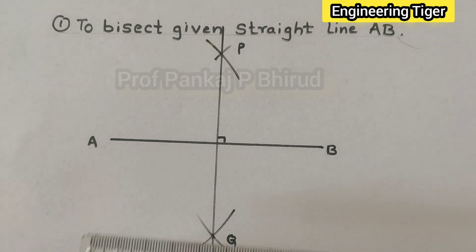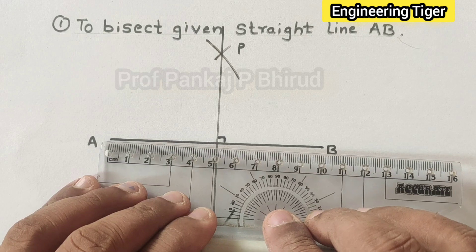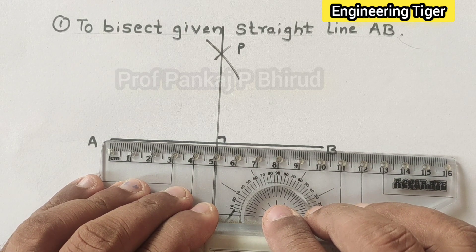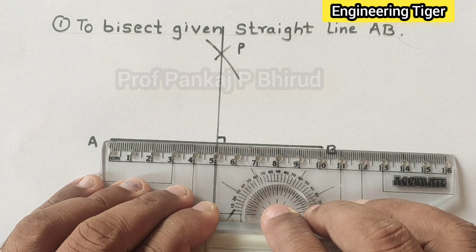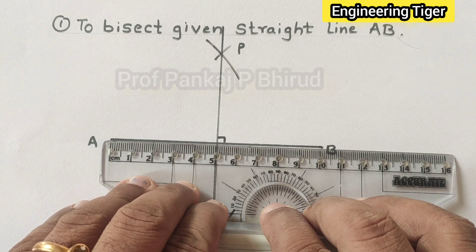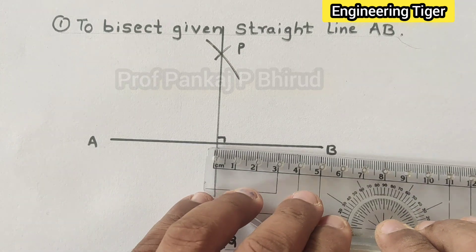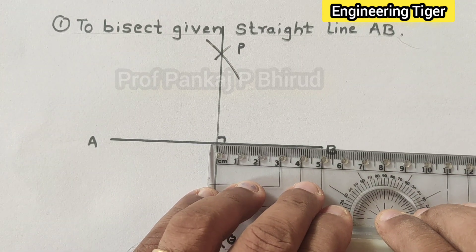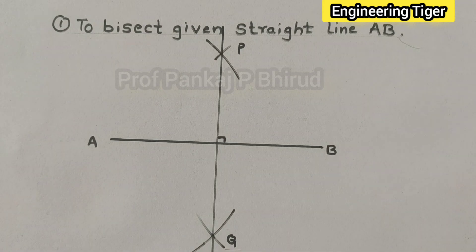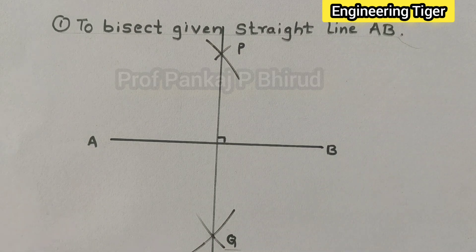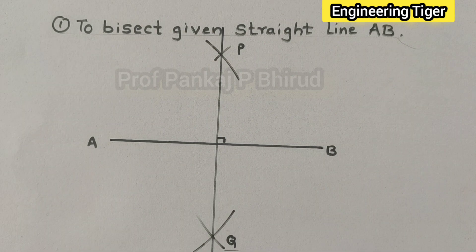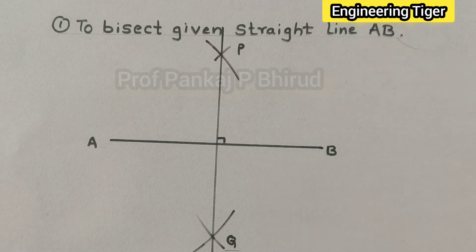If you want to cross-check: the distance from A to where PQ line intersects AB is 50 mm, and the other side is also 50 mm. That means line AB is divided into two equal parts. You will get 5 minutes for drawing this construction.